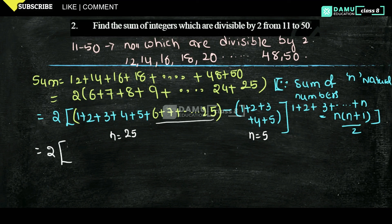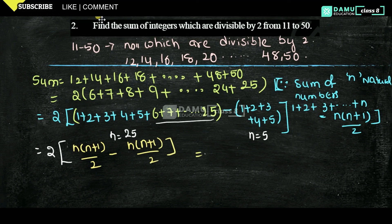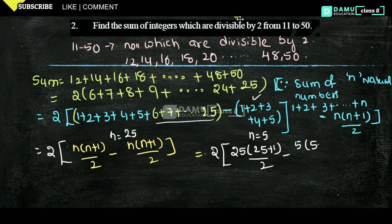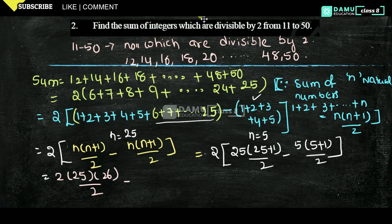So the total sum is 2 into [n(n+1)/2 minus n(n+1)/2], that is 2 into [25 into 26 by 2 minus 5 into 6 by 2]. Simplifying: 2 into [25 into 13 minus 5 into 3], which gives 2 into [325 minus 15].